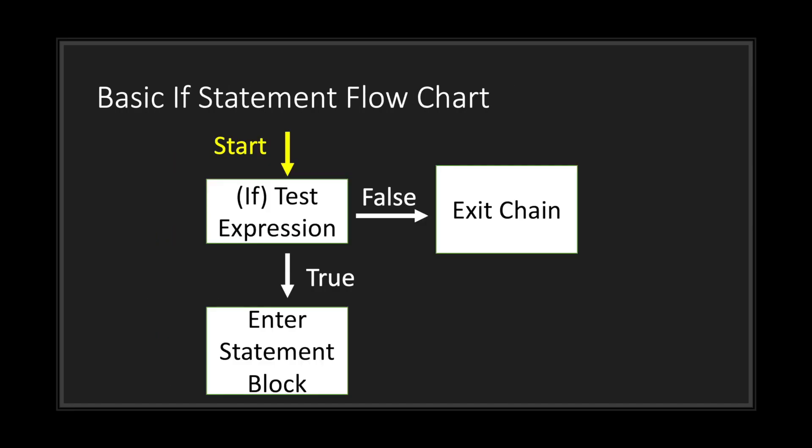Let's take a look at the basic if statement flowchart. Starting at the top of our code, we enter the if test expression. If the test expression comes out to true, we enter the statement block and execute all the code. However, if the if test expression is false, we exit the chain.